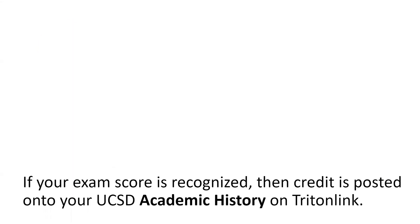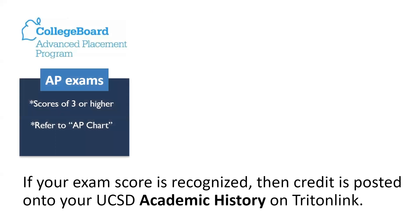When you are admitted to UC San Diego, ideally you submitted your exam scores as soon as possible to the UC San Diego Office of Admissions. Once scores are received and evaluated, any credit earned is posted onto your academic history in your TritonLink account. For AP exams, this means earning a score of 3 or higher. Scores of 2 or below do not qualify for earning credit and are not posted onto your academic history.